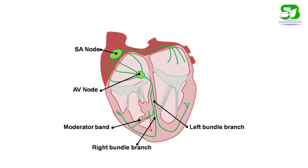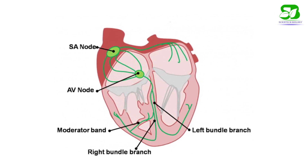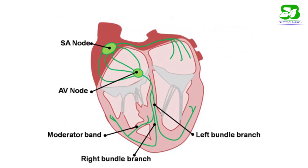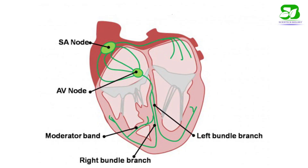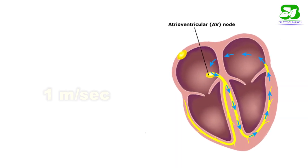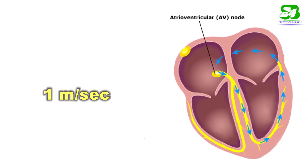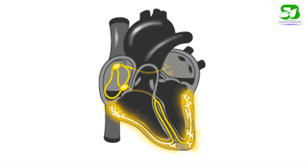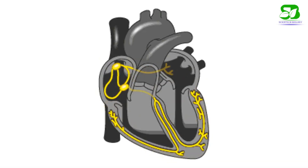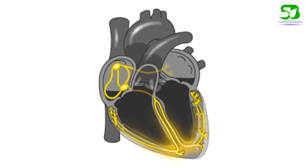The AV node is situated in the right atrium near the opening of the coronary sinus at the posterior part of the inter-atrial septum. The speed of conduction of impulse in the AV node is about 1 meter per second. The AV node receives the impulse originating from the SA node and transmits it to the ventricles through the bundle of His.